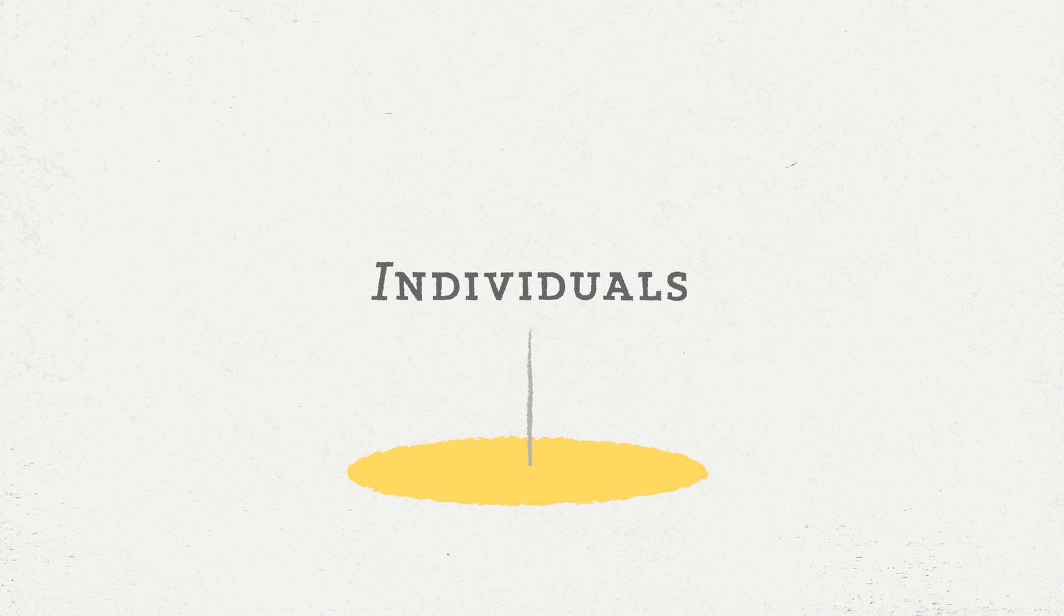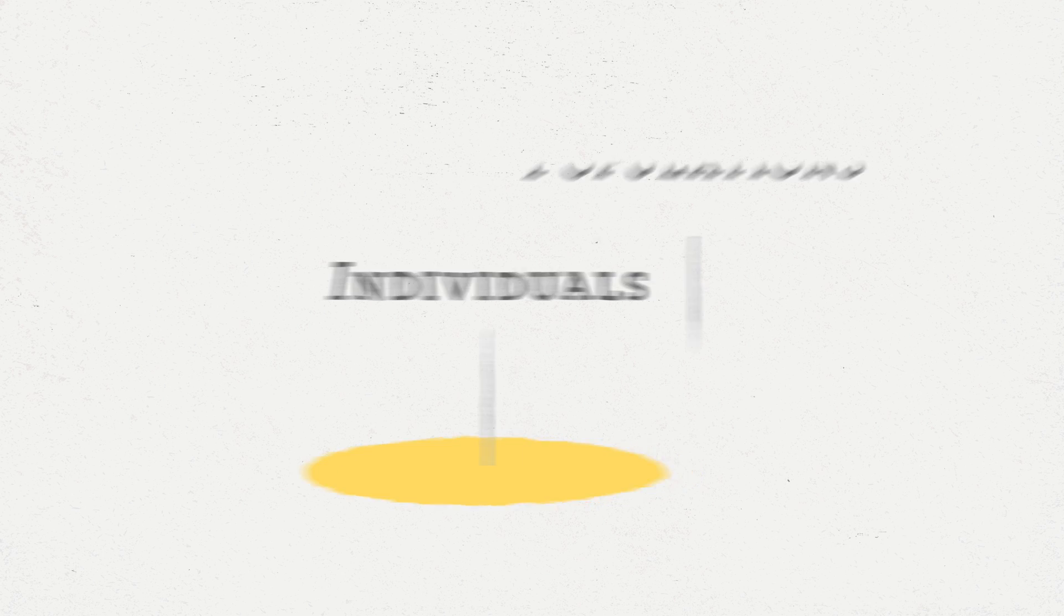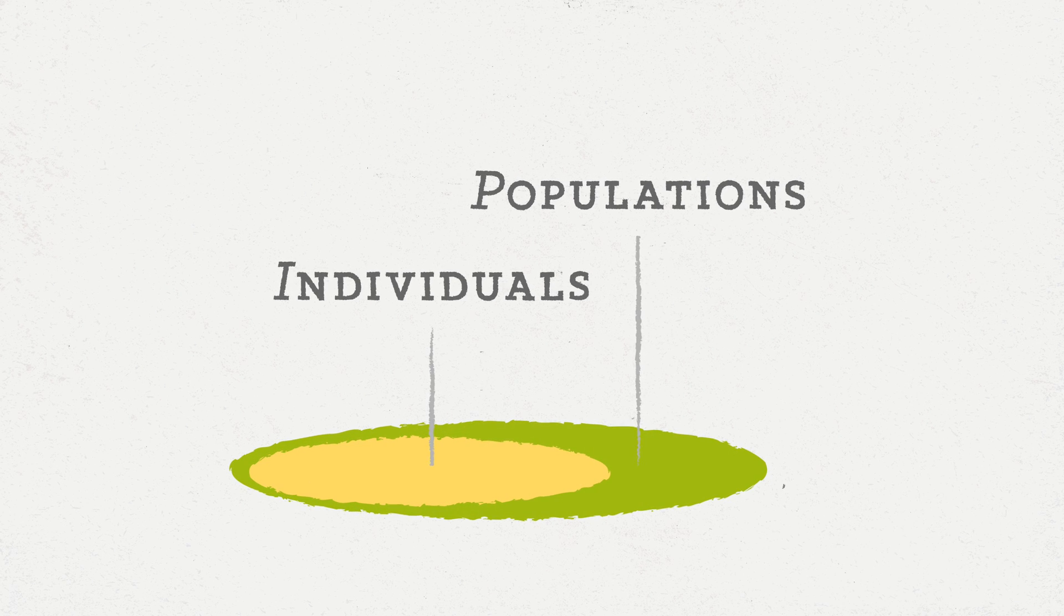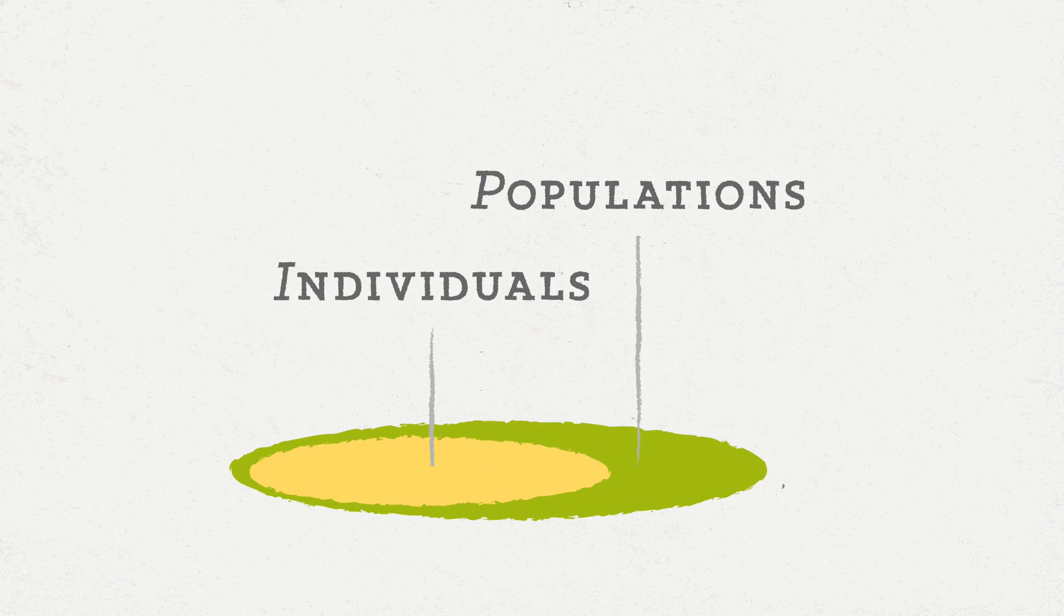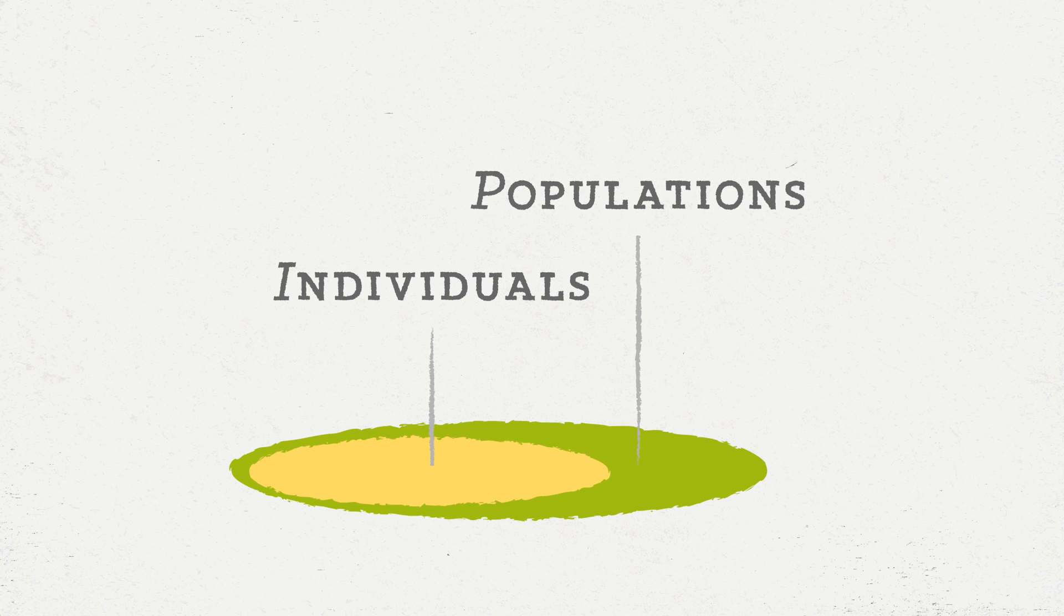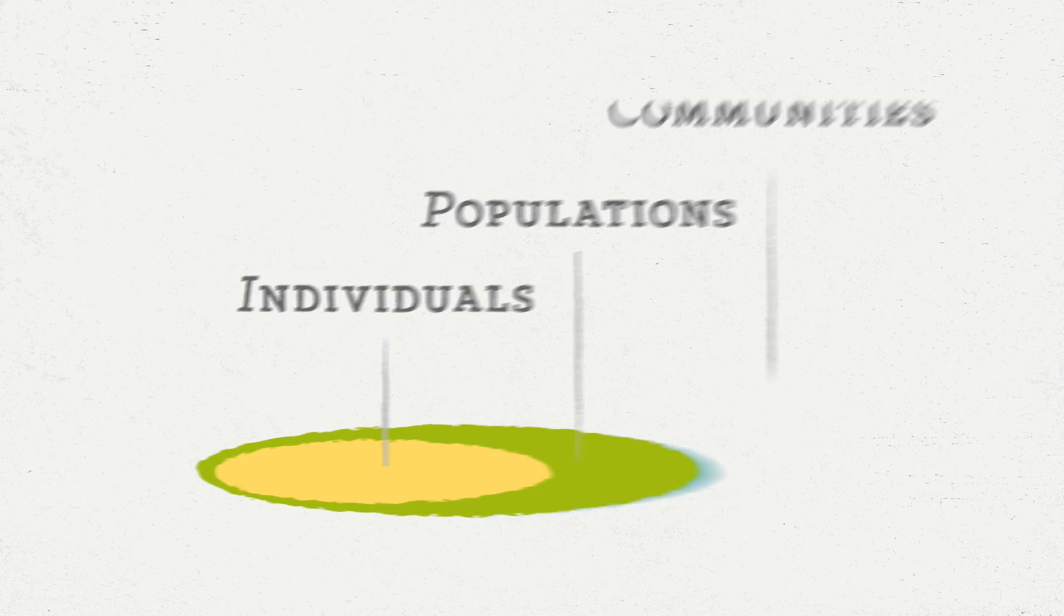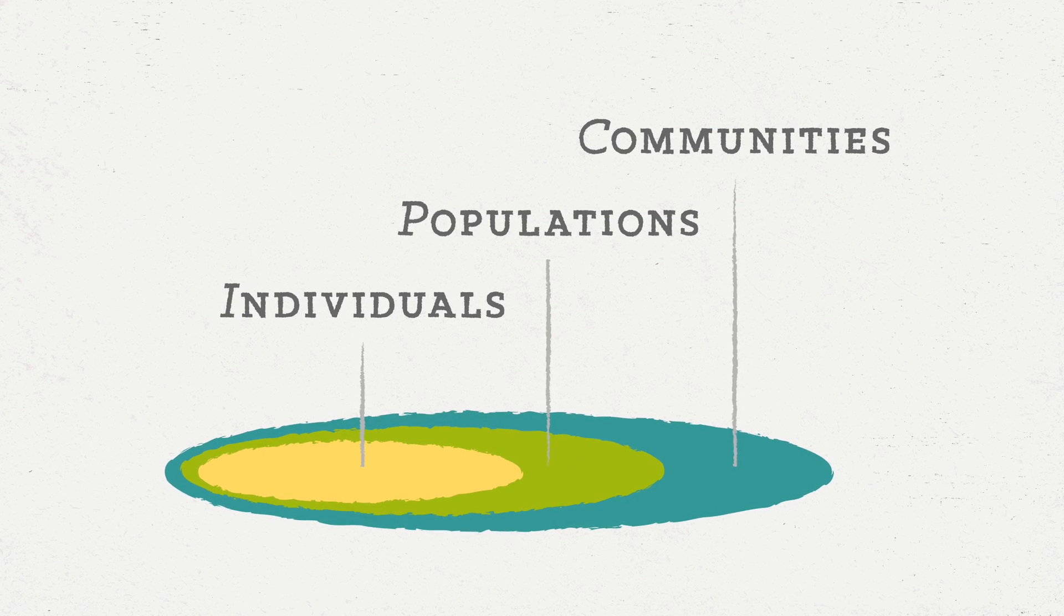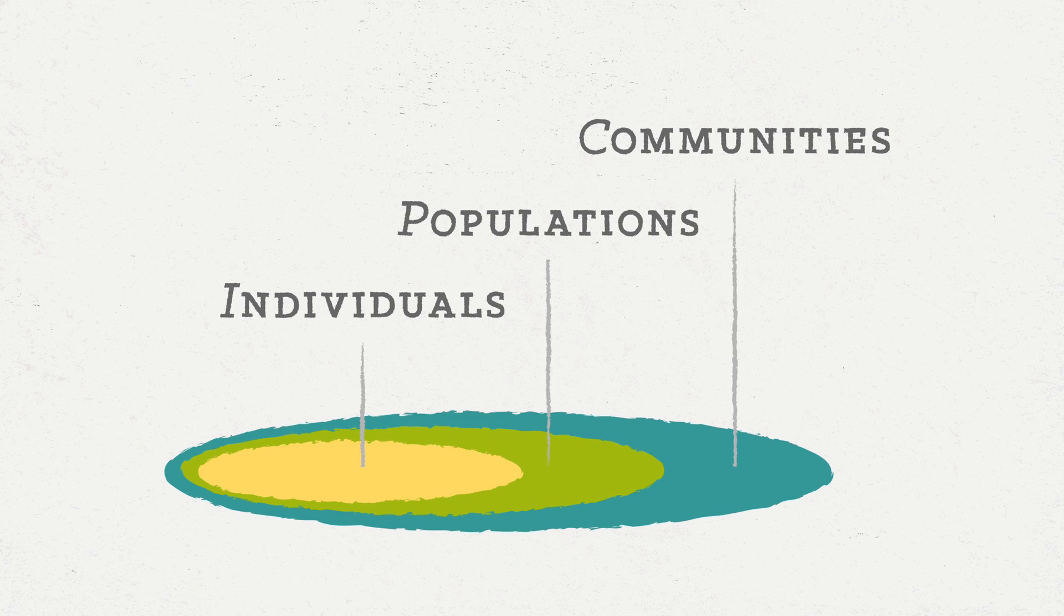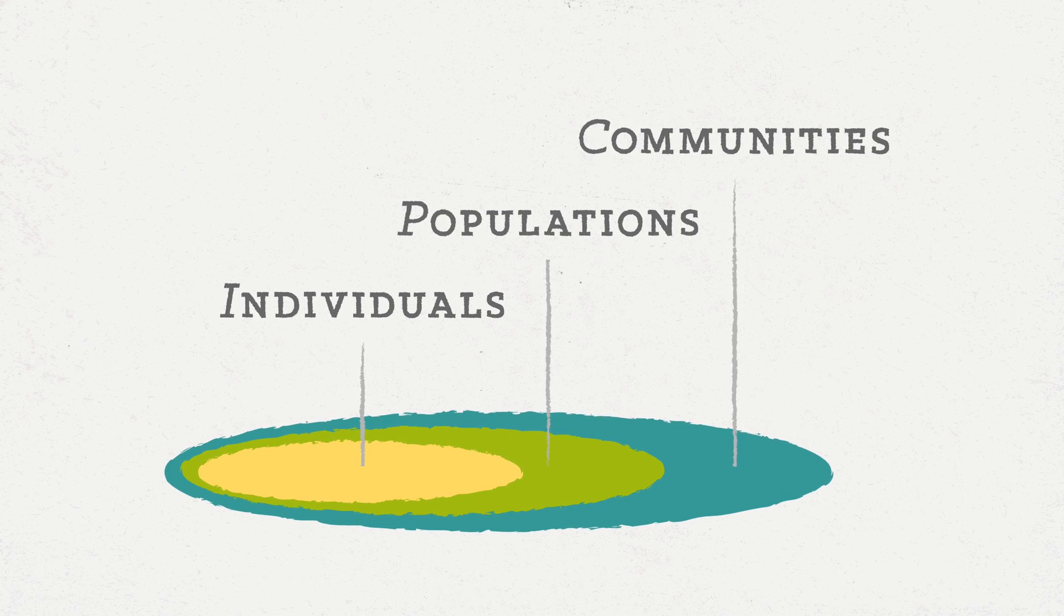So ecologists study the physiology and biology of individual organisms, but also collections of organisms of the same species, which we call populations. Now collections of populations that interact with one another - predation, competition - those are communities.